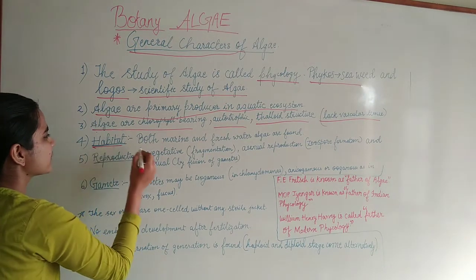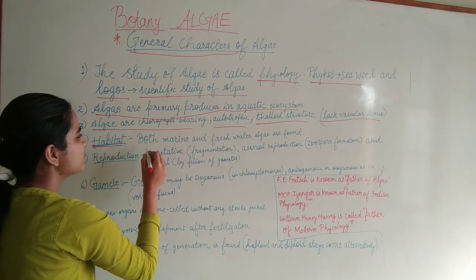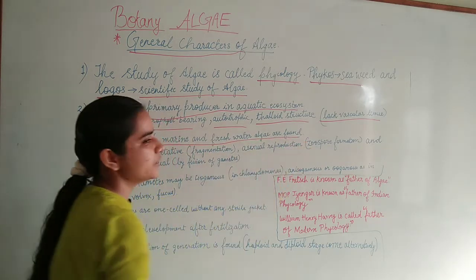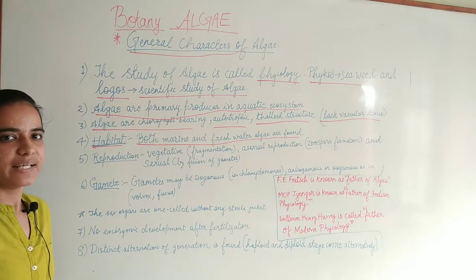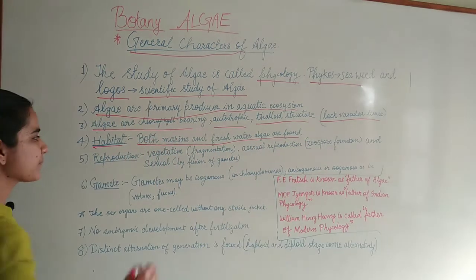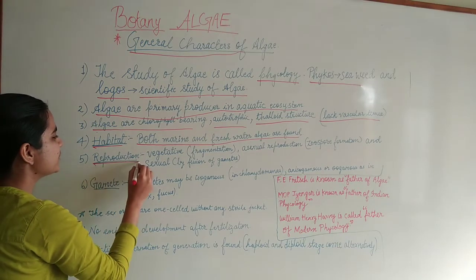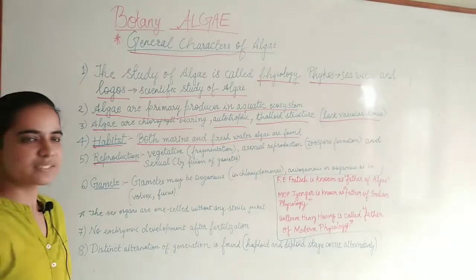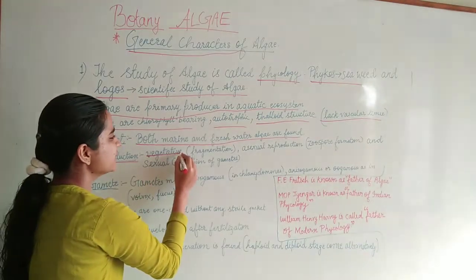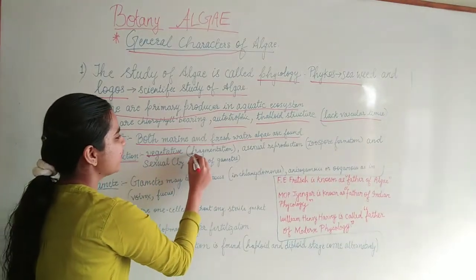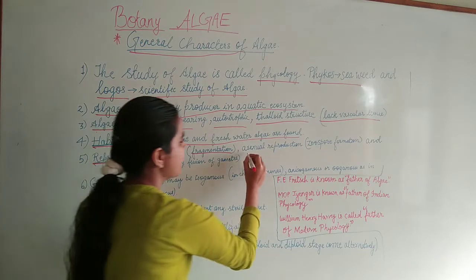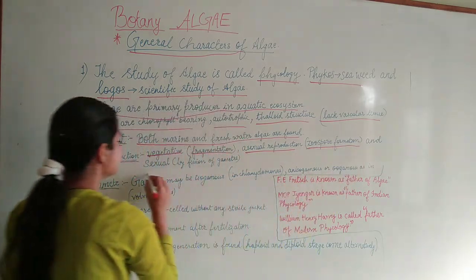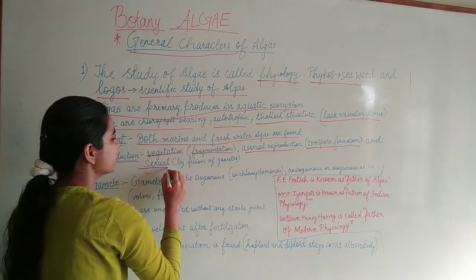Regarding habitat, algae are both marine and freshwater organisms — they are found in both freshwater and marine environments. Reproduction in algae is of three types: first is vegetative reproduction by fragmentation, second is asexual reproduction by zoospore formation, and third is sexual reproduction by fusion of gametes.